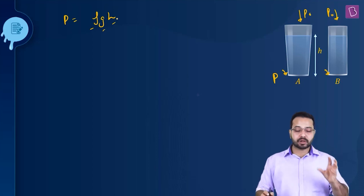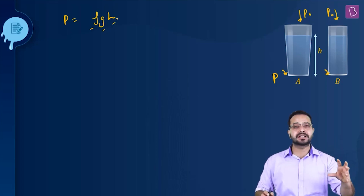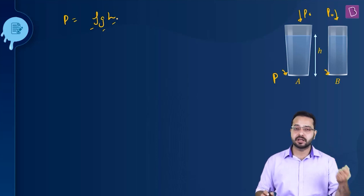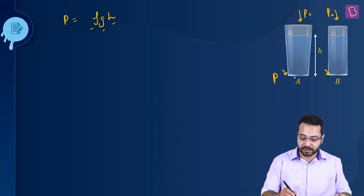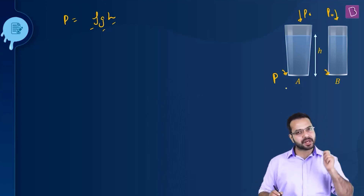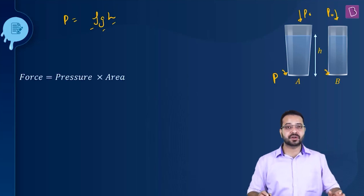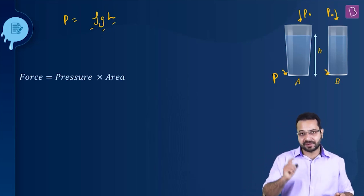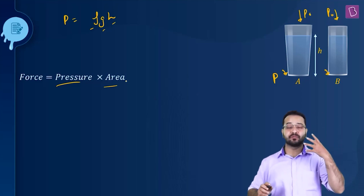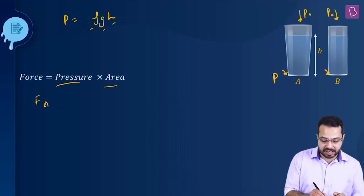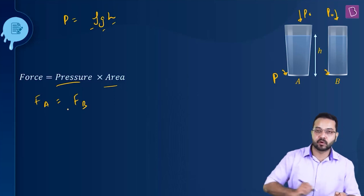Now comparing A and B — what things are the same and what are different? All three things are the same: density is the same because it's water in both containers, acceleration due to gravity is the same, and we have taken the same height. This means the pressure at the bottom of vessel A and vessel B is the same. Force is pressure times area, and we've been given that the base area of both A and B is the same. So the pressure is the same, the area is the same — force has to be the same. FA equals FB.